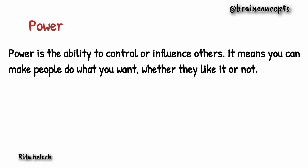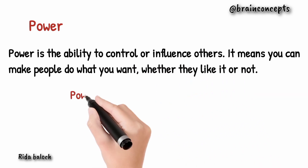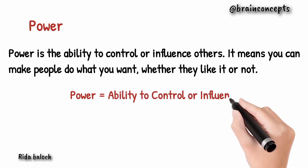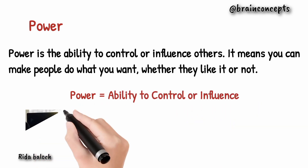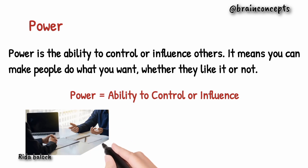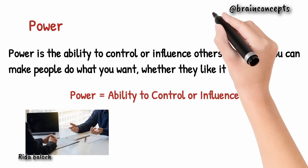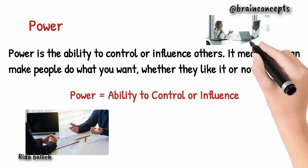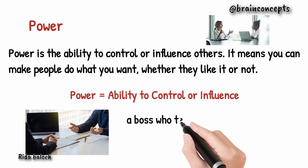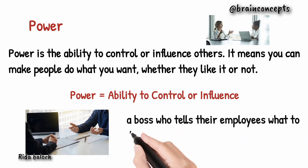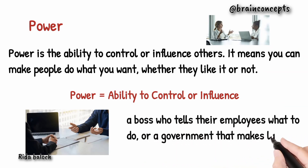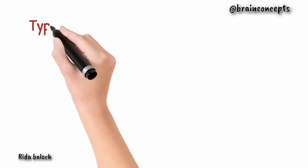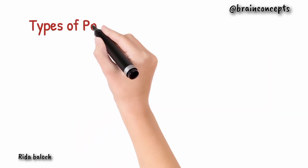Firstly, we will talk about power. Power is the ability to control or influence others. It means you can make people do what you want, whether they like it or not. For example, a boss who tells their employees what to do, or a government that makes laws that everyone has to follow. There are different types of power which we are going to study.